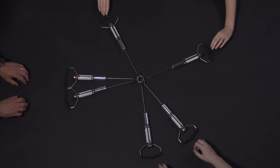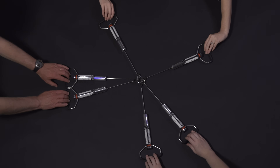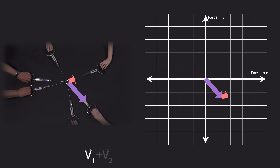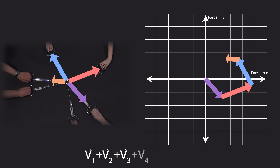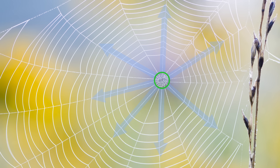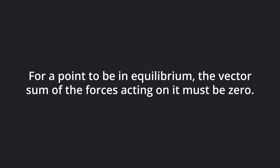It does not matter how many forces we apply to a point — whenever it is in equilibrium, the sum of the forces turns out to be zero. Spiderwebs often have many forces acting at a point, and even these points satisfy the general rule: for a point to be in equilibrium, the vector sum of the forces acting on it must be zero.